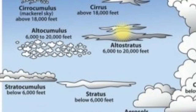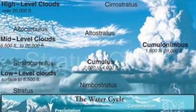Medium clouds are found at altitudes of 2000 to 7000 meters. Altocumulus clouds have a wave-like, layered structure; they are white in color with a gray shade. Altostratus clouds are thin clouds — not thick — and the sun can be seen through altostratus clouds.